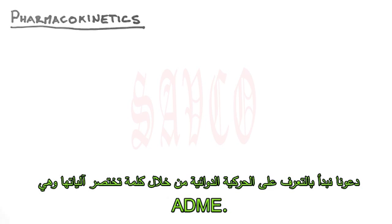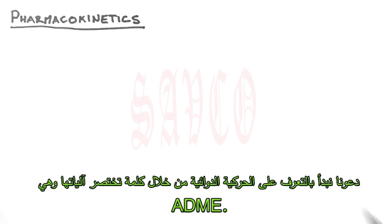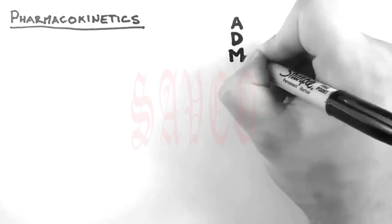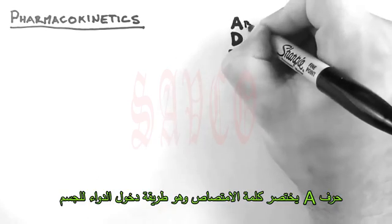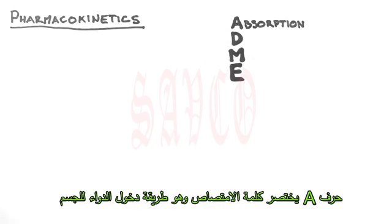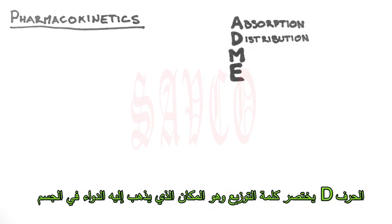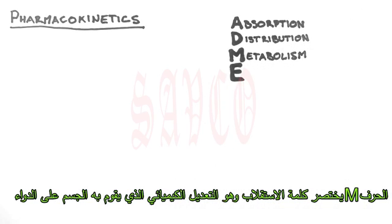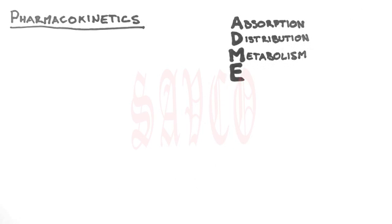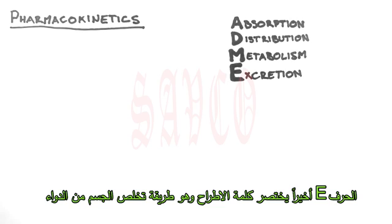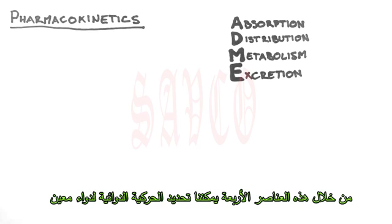It is this branch of pharmacology that we will be looking at in this series. So let's begin with a pharmacokinetics acronym you'll find in every textbook of pharmacology: ADME. This stands for Absorption, which is how the drug gets into the body; Distribution, which is where the drug goes to in the body; Metabolism, which is how the body chemically modifies the drug; and finally Excretion, which is how the body gets rid of the drug. These are the four elements we need to consider when talking about the pharmacokinetics of a certain drug.